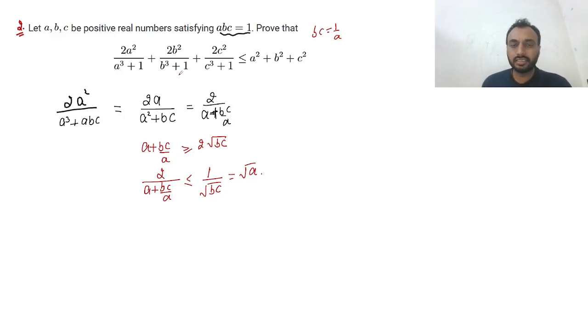Similarly I can say the second factor is less than or equal to √b and the third is less than or equal to √c. Our expression is less than or equal to √a + √b + √c.